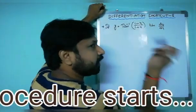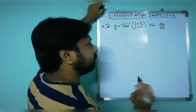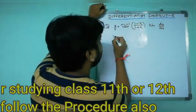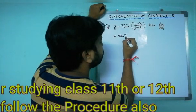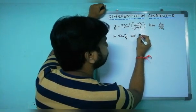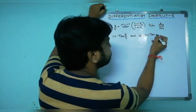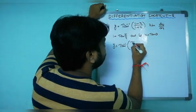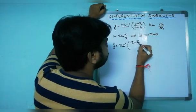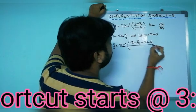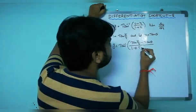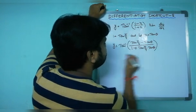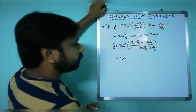First, look at the procedure. Here, 1 can be written in terms of tan as tan(π/4). Let x be called tan θ. So 1 equals tan(π/4) and x equals tan θ. Now y becomes tan inverse of (tan(π/4) minus tan θ) divided by (1 plus tan(π/4) times tan θ).